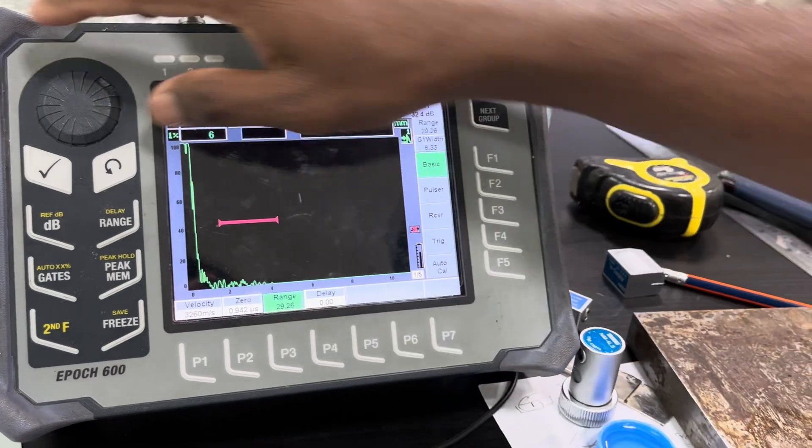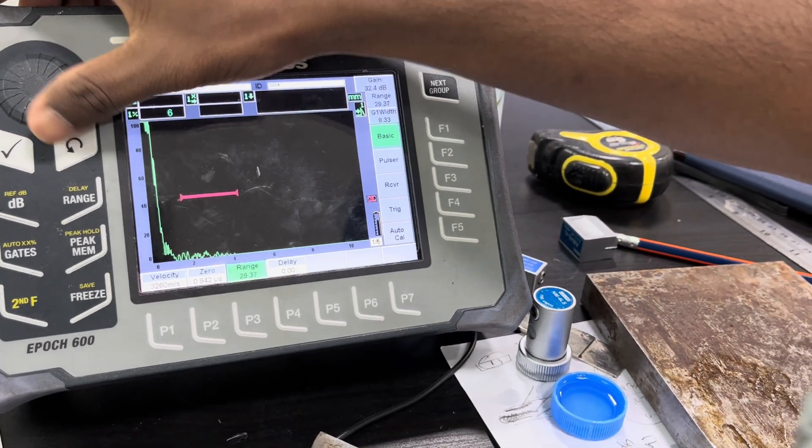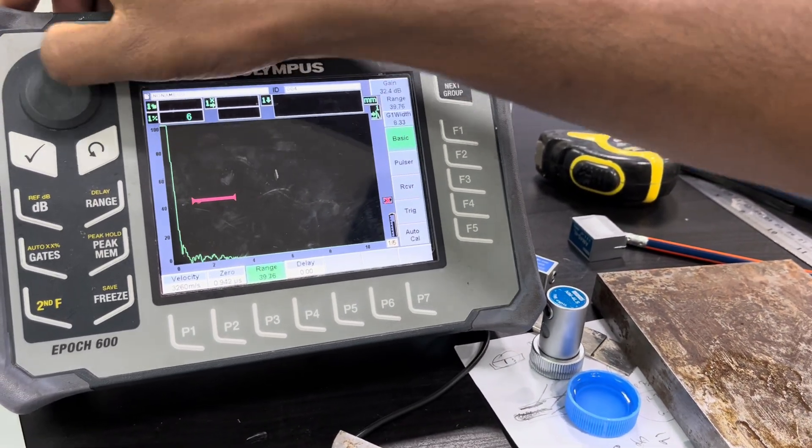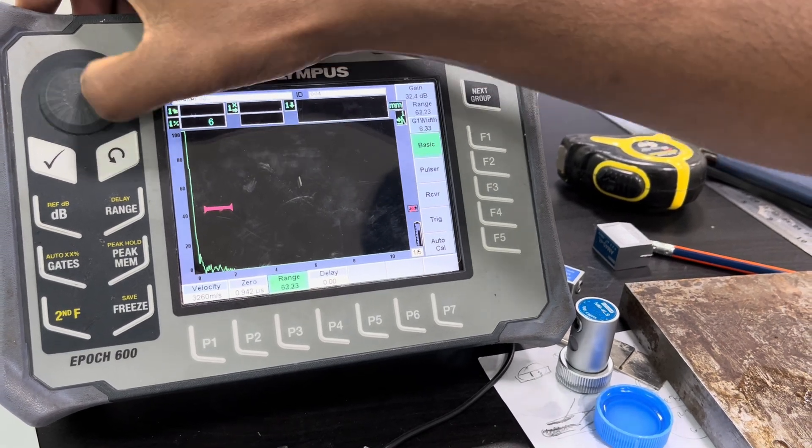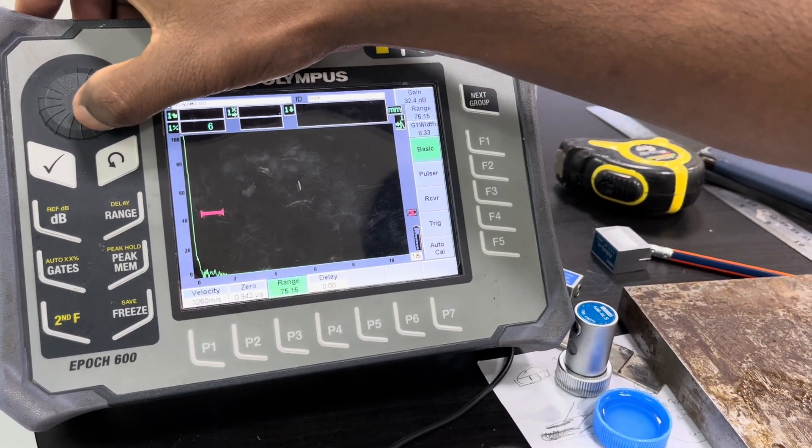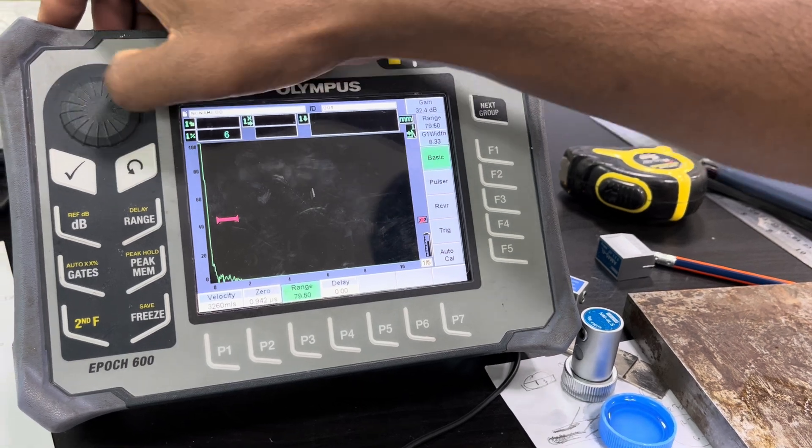And then for range, I am going to select 200. I want to get three back wall echoes on both sides.